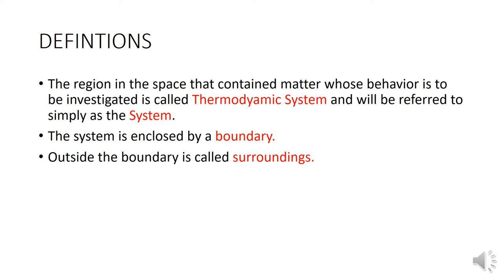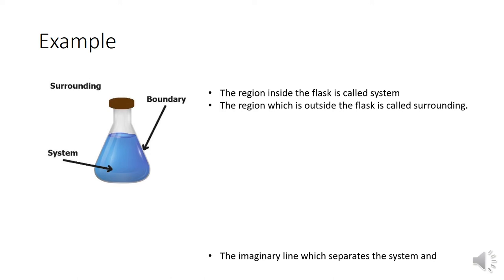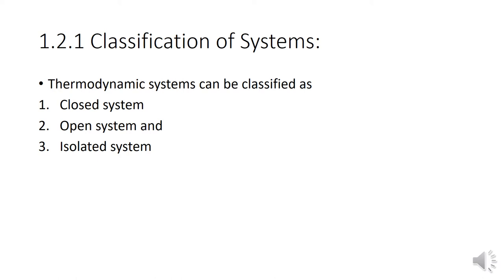The system is enclosed by a boundary; outside the boundary is called the surroundings. The system is classified into three types: closed system, open system, and isolated system. A closed system is like a beaker with liquid closed with a cap. An open system is the flask without a cap. An isolated system is a flask insulated with a material.